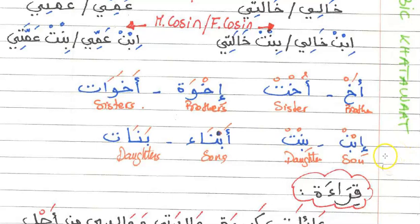In the next line we have ibn for son — similar to ibn khali — and bint for daughter. To say 'my son' you say ibni, and 'my daughter' is binti. These words are also used by people who are not necessarily your parents; they would refer to you as their son or daughter out of respect, just as you show respect to someone older as uncle or auntie. The plural forms are abna for sons and bnat for daughters.